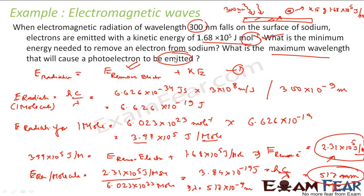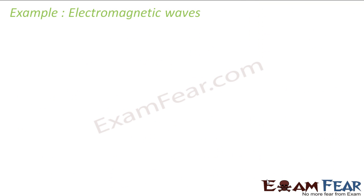To summarize: the wavelength of radiation was given, so I found the energy per molecule, then converted to per mole since kinetic energy was given per mole. I found the minimum energy to remove the electron per mole, converted back to per molecule, and used E = hc/λ to get λ_max = 517 nm.